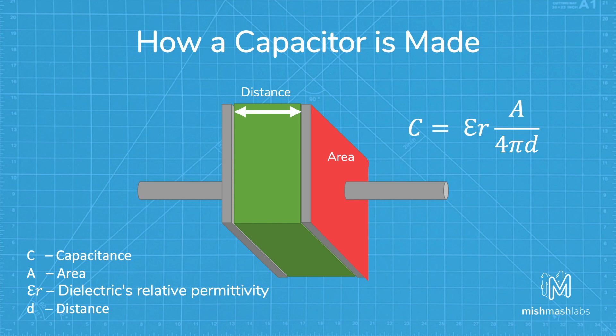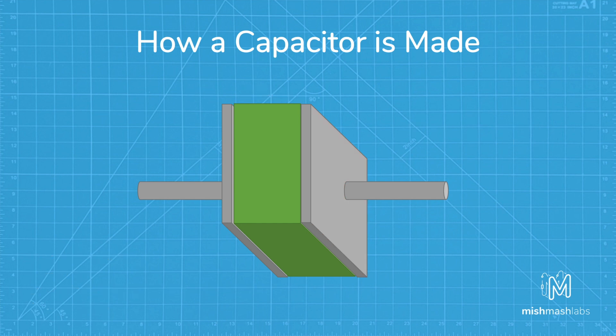In this equation you can see the capacitance is equal to the dielectric's relative permittivity, which is dependent on the material used, times the area over 4π times the distance between the two plates.